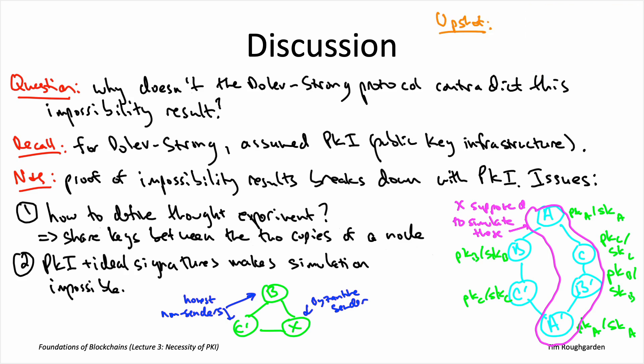So what we saw with the Dolev-Strong protocol is that if you do have the PKI assumption and you're in the synchronous model, then you can actually solve Byzantine broadcast to get agreement and validity no matter what f is. And then the main thing we learned from today's lecture is that if you don't have this PKI assumption, so if a Byzantine node really is capable of carrying out this simulation of a chain of four nodes in a row in the thought experiment, then in fact you cannot get Byzantine broadcast for arbitrary number of faults little f. You need little f to be less than a third of the nodes.